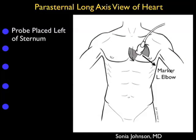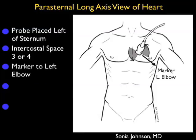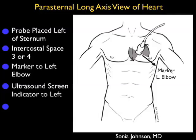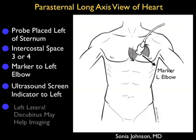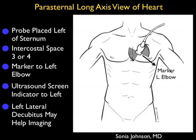For this examination, it's optimal to use a small footprint phased array type probe that can easily sit between the ribs. We're going to place the probe just left of the sternum at about intercostal space three or four, with the marker dot on the probe aimed down towards the patient's left elbow if the patient's left elbow is down by the side, with the caveat that the ultrasound screen indicator would be over towards the left of the screen. This will align the probe in the long axis of the heart.